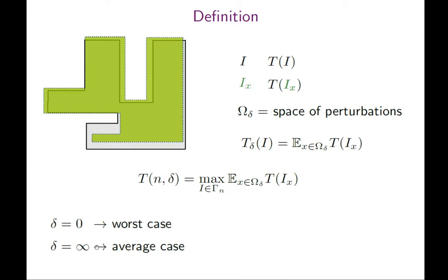If delta is huge, then essentially it doesn't matter which instance you start with—you just perturb it so much that it looks like an average instance—and this would correspond essentially to average case analysis. So choosing some delta in between interpolates between these two extremes, and then we call it smoothed analysis.